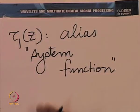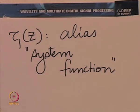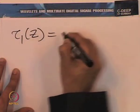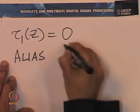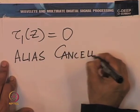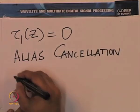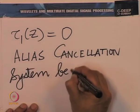I put 'system function' in inverted commas. When there is an alias term, the word 'system function' is actually a misnomer — one should not use that term because the system is not linear and shift invariant. On the other hand, if τ1(z) is zero, the system becomes linear and shift invariant. So τ1(z) = 0 is the condition for alias cancellation, and we note the system becomes LSI.